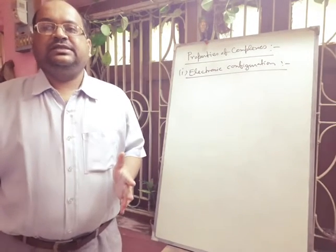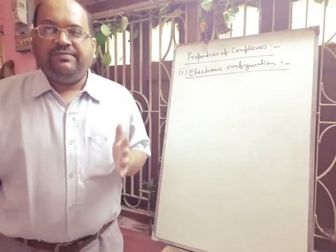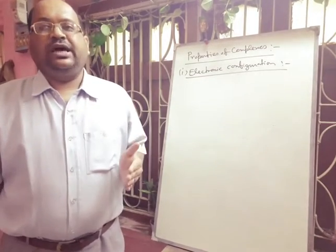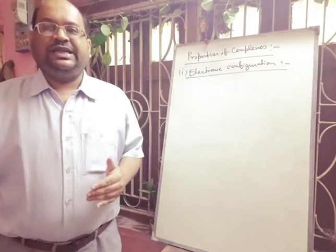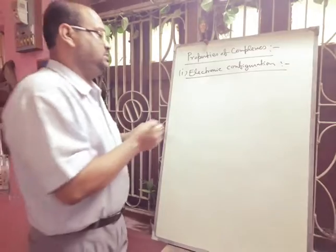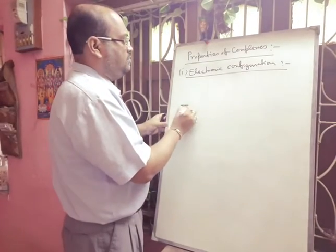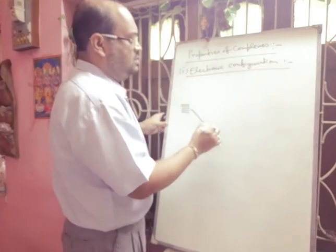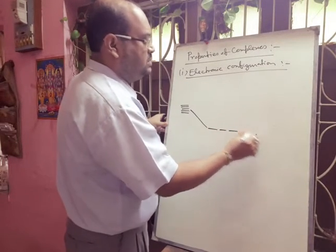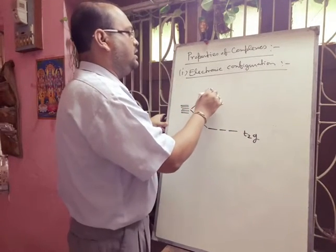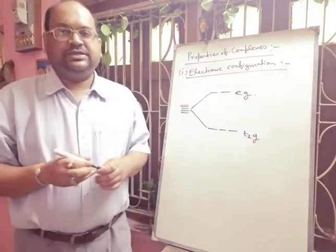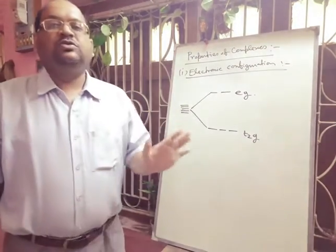In octahedral complexes, the five d orbitals split into three t2g orbitals of lower energy and two eg orbitals of higher energy. So in octahedral complexes, the d orbitals at the lower level are t2g orbitals and at the higher level are eg orbitals. According to Hund's rule,